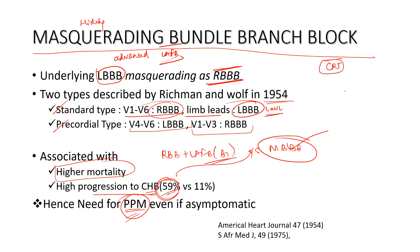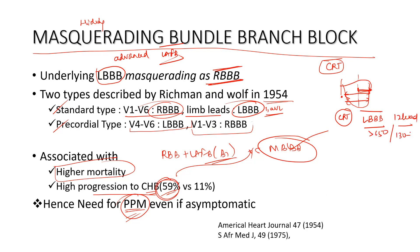Apart from that, there is cardiac resynchronization therapy (CRT). As heart failure worsens, the LV and RV are not going to contract synchronously — there is interventricular and intraventricular dyssynchrony. To bridge this, leads are placed in both ventricles to make them contract simultaneously. CRT works best for patients who have an LBBB morphology on the surface ECG with QRS more than 150ms. If a patient has masquerading bundle branch block, he becomes eligible for CRT because the underlying problem is advanced conduction disease.